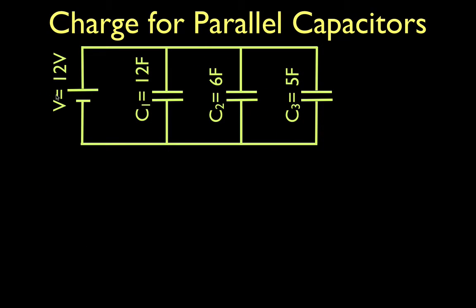This is the circuit we're going to use. We have a 12-volt battery, 12-volt voltage supply, and we have C1, C2, and C3, a 12, a 6, and a 5-farad capacitor, respectively.